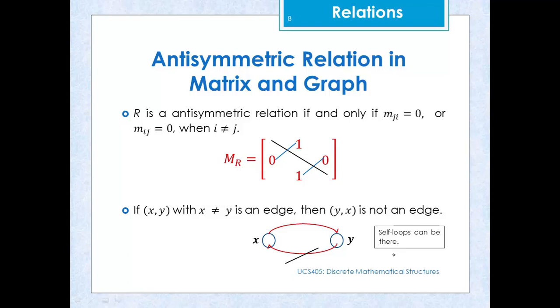However, self-loops are allowed in antisymmetric relations. That means ordered pairs of the type (x,x) or (y,y) can be present in a relation that is antisymmetric.